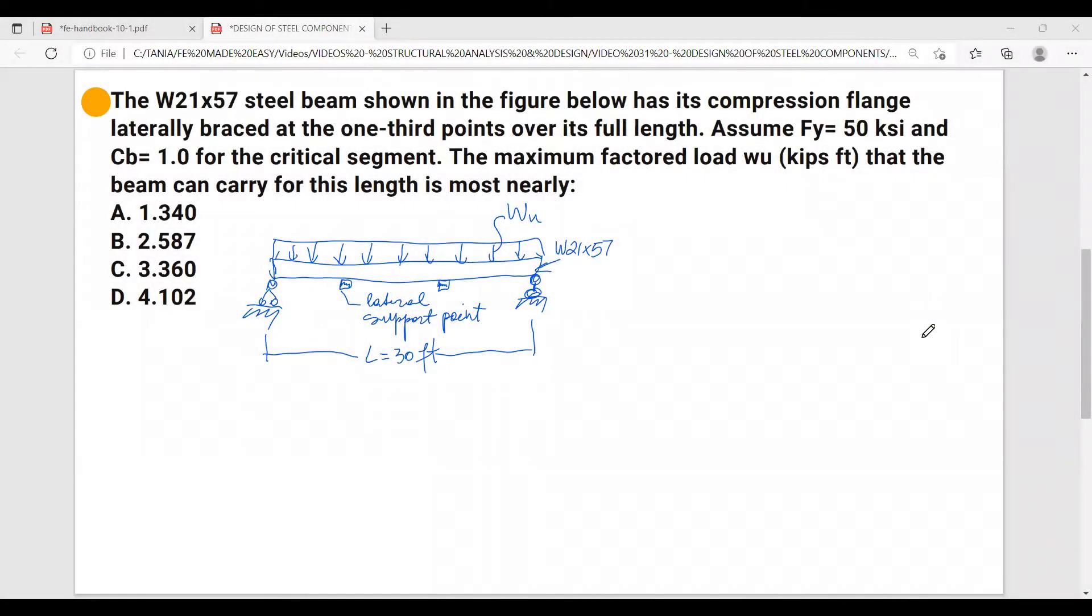Now let's move on with our example. The steel beam shown in the figure below has its compression flange laterally braced at the one-third points over its full length. Assume fy equals 50 ksi and cb equals one for the critical segment. The maximum factored load that the beam can carry for this length is most nearly.